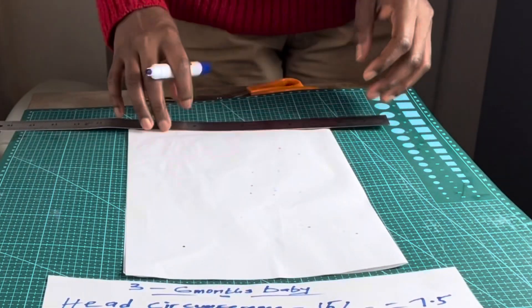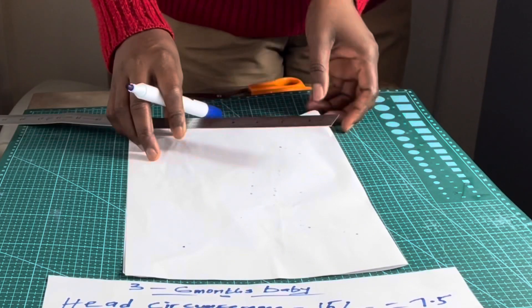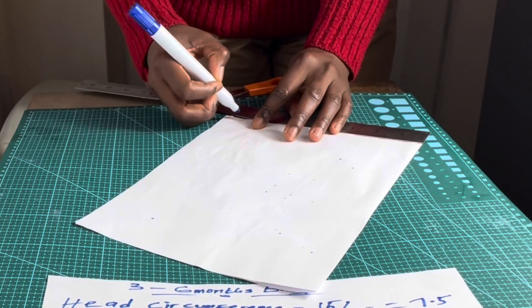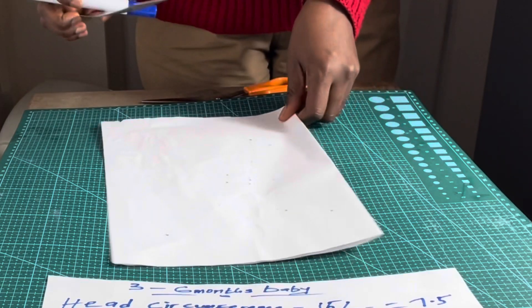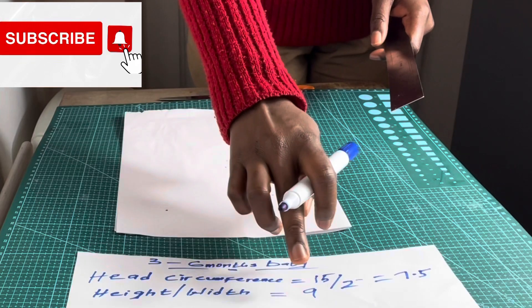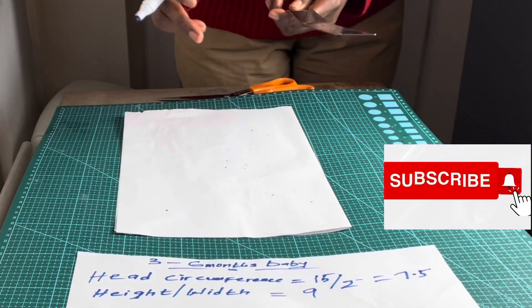The height of the band is going to be 9 inches, then I will mark 9 inches at this end. Now I've marked 7.5 here and 9 inches here.